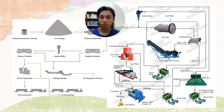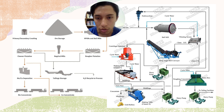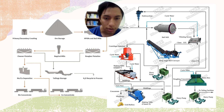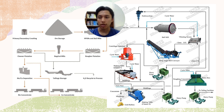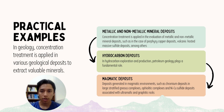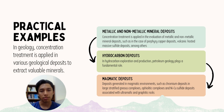Here we can see different types of graphs related to our process, which can be seen in different types of mining. The first graph shows copper concentrate processing, and the second graph is more related to gold processing. In geology, concentration treatment is applied in various geological deposits. In the practical examples, we can see three cases: metallic and non-metallic mineral deposits, hydrocarbon deposits, and magmatic deposits.